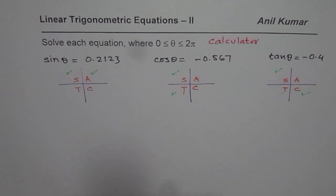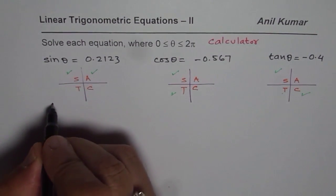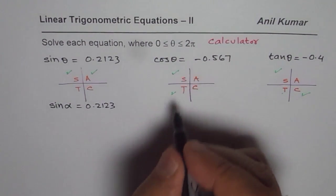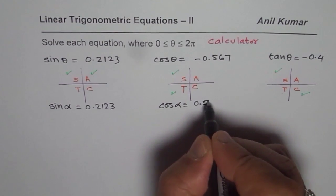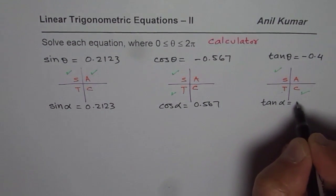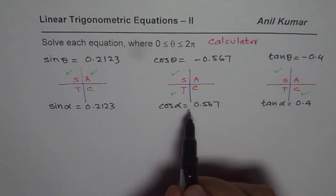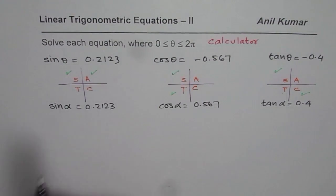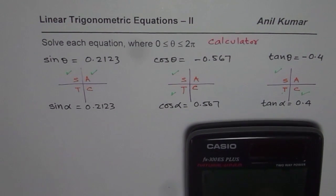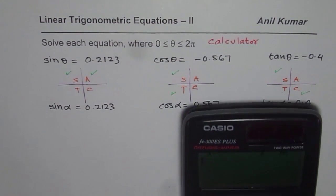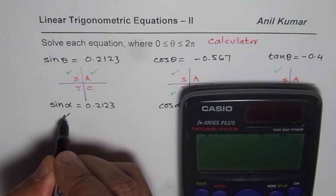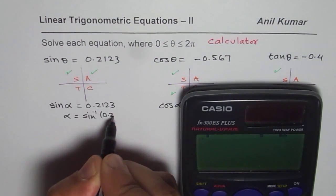When we have to solve these equations, we actually first find the acute angle. So let me rewrite this equation as sin α = 0.2123. Here, I will write cos α = 0.567. And here, I will write tan α = 0.4. We will first find the acute angle and then we are going to find the actual principal angle. This θ is a principal angle within 0 to 2π. Now, sin α = 0.2123, that really means that α = sin⁻¹(0.2123).